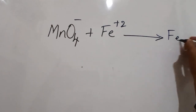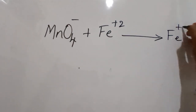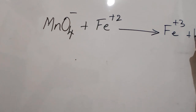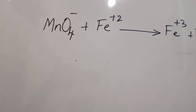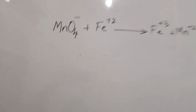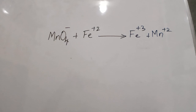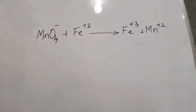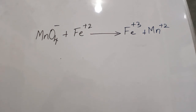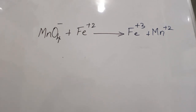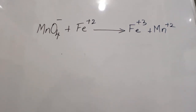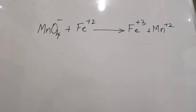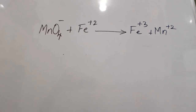Let us know how to balance these redox reactions. Oxidation means a reaction in which both oxidation and reduction take place. Oxidation means the loss of electrons. Reduction means the gain of electrons.